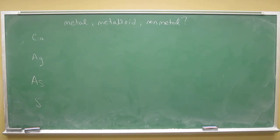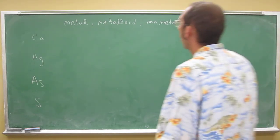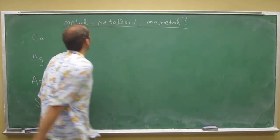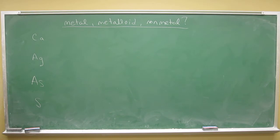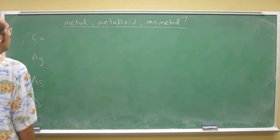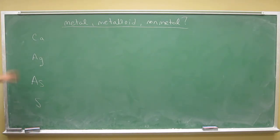So now that we've talked about the topic of metals, metalloids, and non-metals, where they are on the periodic table, you should be able to do this one. So what are these, metals, metalloids, or non-metals? Each of them individually, that is.